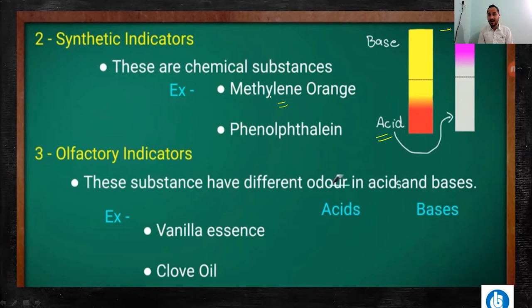Next we talk about methyl orange. This is the name — methyl orange. So methyl orange is an orange-red colour. When you add acid, it shows a reddish colour — it shows orange-red. But in a base, it shows yellow colour. In basic solution, it shows yellow colour. So this is our synthetic indicator.